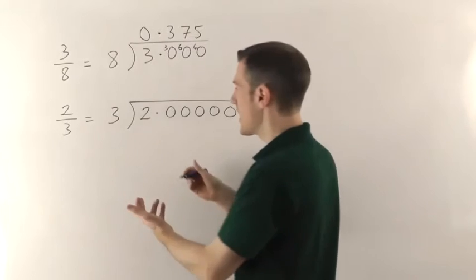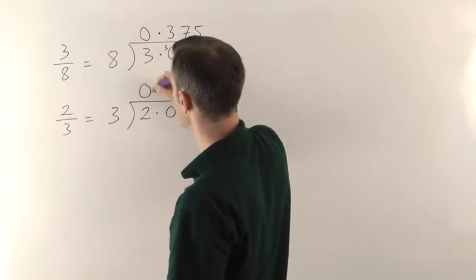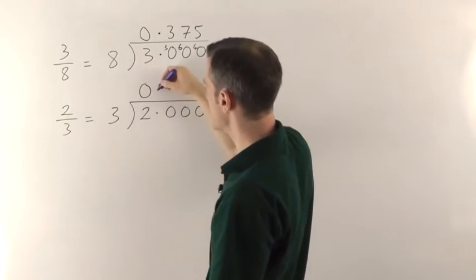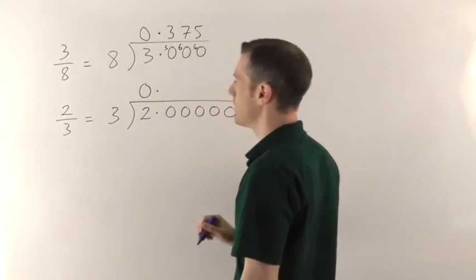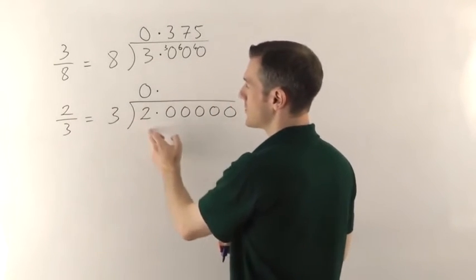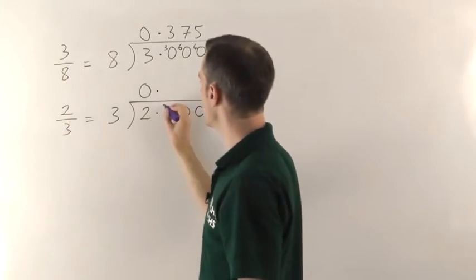All right 3s into 2 go no times. 2 is too small to fit a 3 into it. Make sure your decimal point goes above the one below. And if 3 goes into 2 0 times the remainder is 2 which I'll put there.